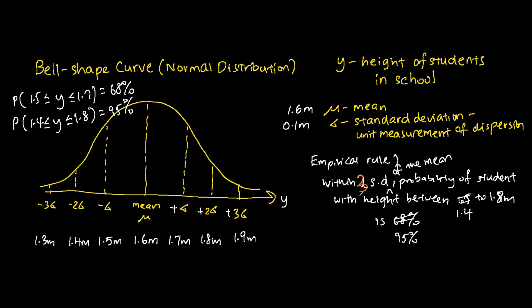Last but not least, within three standard deviations of the mean, the probability of students with height between 1.3 meters and 1.9 meters is 99.7 percent. So if I were to select a student within the school, the probability of this student's height being between 1.3 and 1.9 meters is 99.7 percent. In other words, P(y between 1.3 and 1.9) = 99.7 percent.